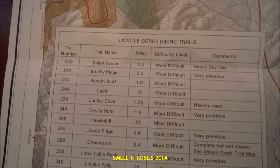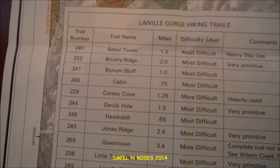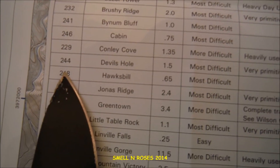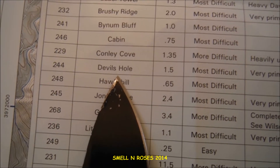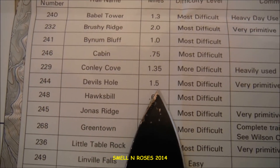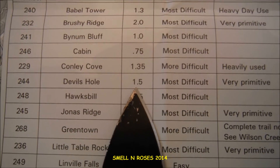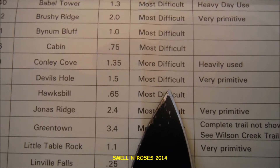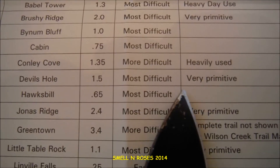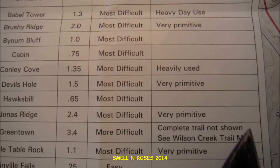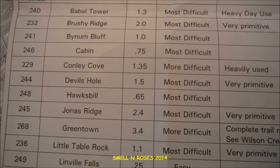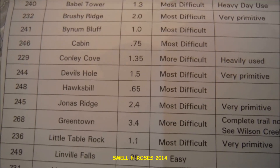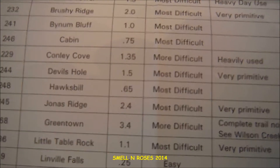and it's listed with its trail name and a trail number, 244. As many maps will have, you can see a list of the trails, and if we look here, 244 — there's the Devil's Hole Trail. It happens to be 1.5 miles in length. It's considered very difficult and very primitive. We can use this information to help us plan our trip if we're thinking of hiking that trail.